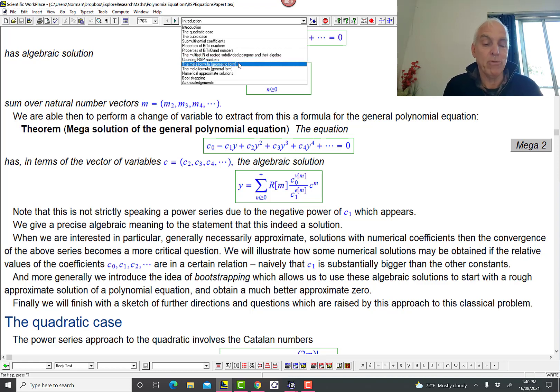And then we have our meta formula, first of all, in the geometric form, which is simpler because that's a power series. And then the more general form, which is not quite a power series because there's negative powers of C1. And then we should say something about numerical approximate solutions, although probably there will be much more to say about that. That's not really the main point, but I do want people to realize that this is not entirely just algebraic, that there's also actual practical applications of this. Although there might be a lot to investigate in that direction. And I want to at least mention this bootstrapping technology.